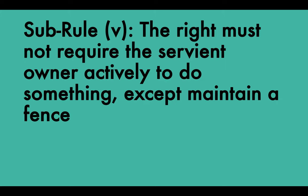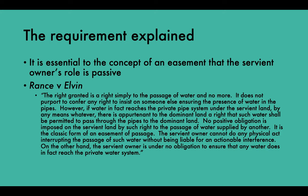Sub-rule five: the right must not require the servient owner actively to do something, except maintain a fence. It is essential to the concept of an easement that the servient owner's role is passive — an obligation requiring the servient owner to expend money or undertake a positive action cannot qualify as an easement. The one exception, established in Jones v Price, is that a right requiring a servient owner to maintain a boundary fence is a valid easement. In Rance v Elvin (a water company case), the water company supplied water to both dominant and servient land through pipes running under the servient land; the servient owner was responsible for paying the water company's bills, and the dominant owner sought a declaration of an easement for uninterrupted supply of water.